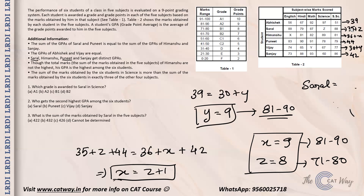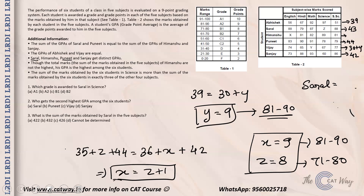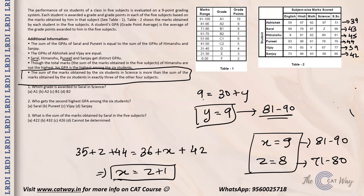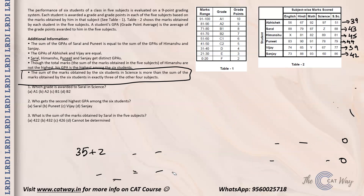Now we know the GPA of all students. To summarize the solved values: X equals 9, Z equals 8, Y equals 9. Next, we look at the total marks in each subject across all six students: English is 374 plus X; Hindi is 470; Mathematics is 445 plus Y; Science is 391 plus Z; Social Science is 462.